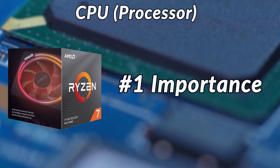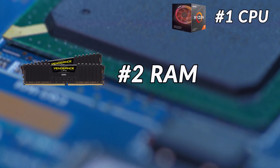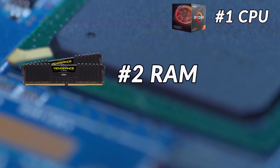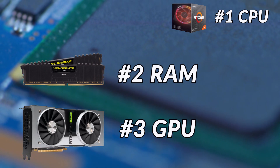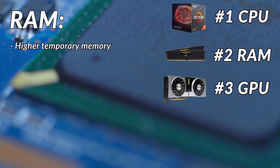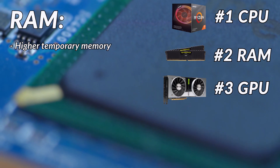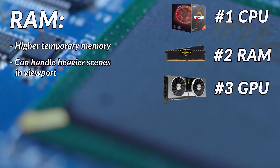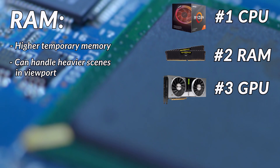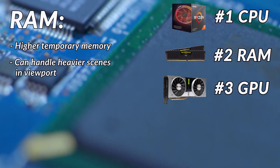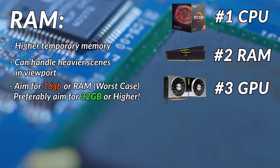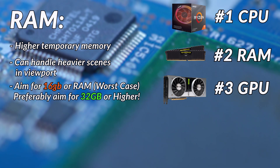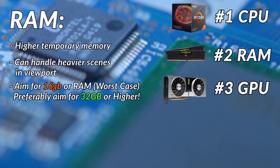Second and third most important are RAM and GPU, which is graphics card. The higher the RAM, the more temporary memory your computer can handle at a time, meaning you can handle heavier scenes in your viewport. I'd say try and aim for about 16 or 32 gigabytes of RAM depending on how much 3D animating you do.